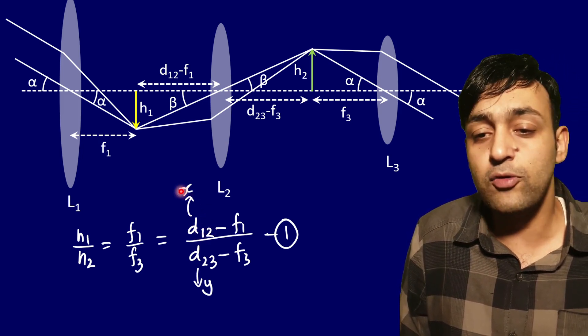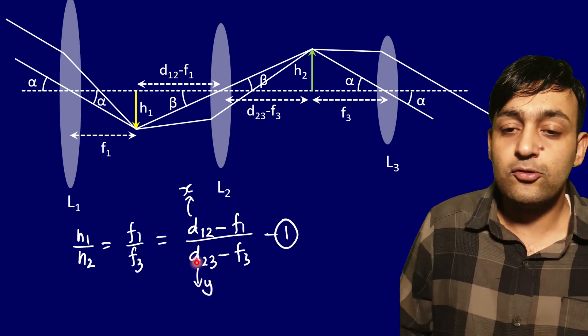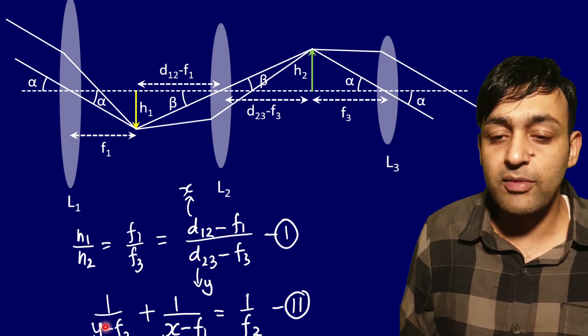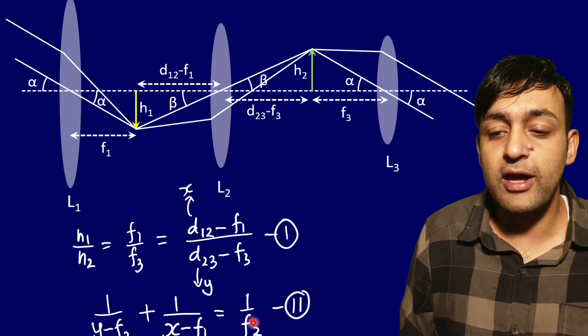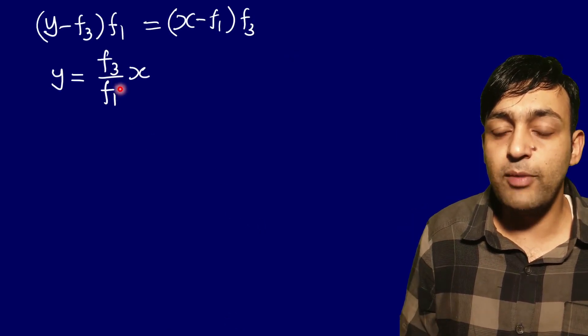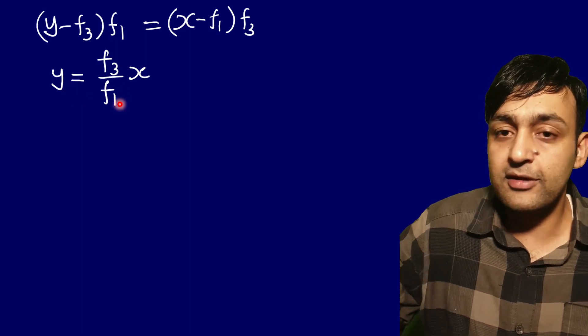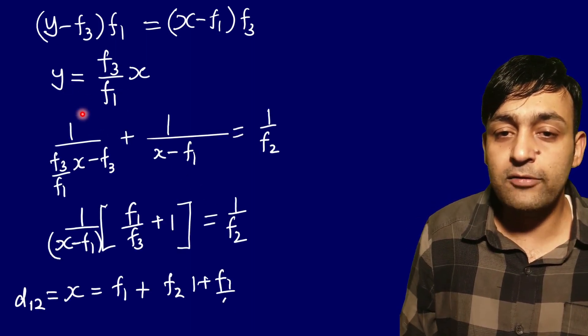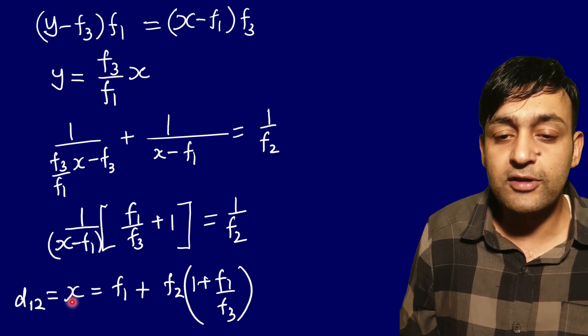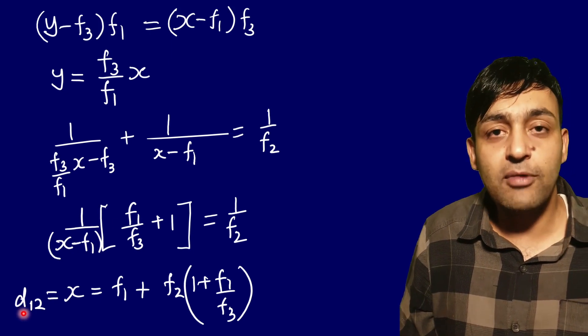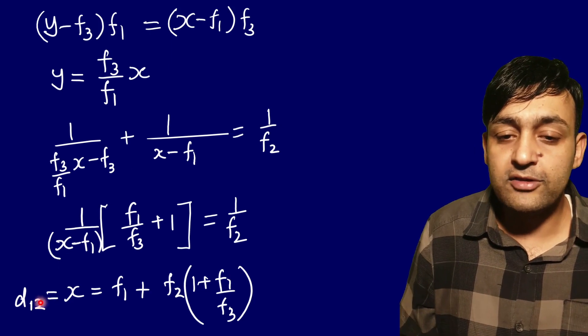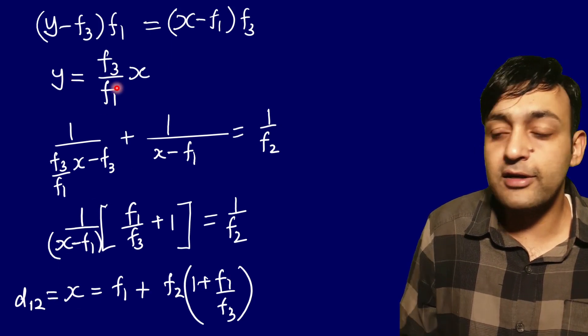The next equation we have is from the lens equation: 1 by v minus 1 by u equals 1 by f. We just have to calculate this part. After cross multiplying, we'll get this result and substitute the value of y in the lens equation. After solving all of this, we will get the value of x. x was nothing but d12 that we had to determine, so d12 equals this much. We can put the value of x here and get the value of y. This is the correct solution.